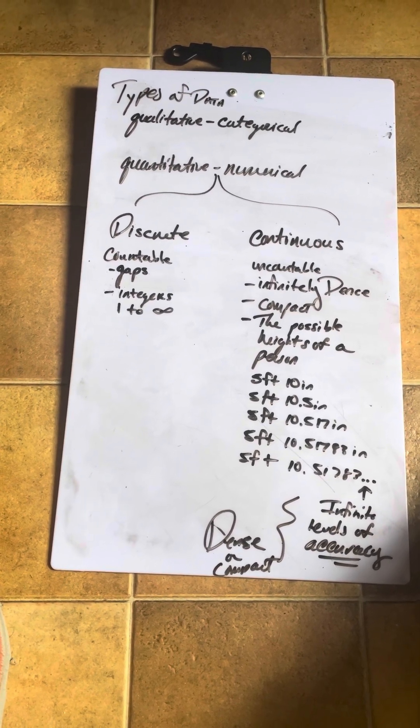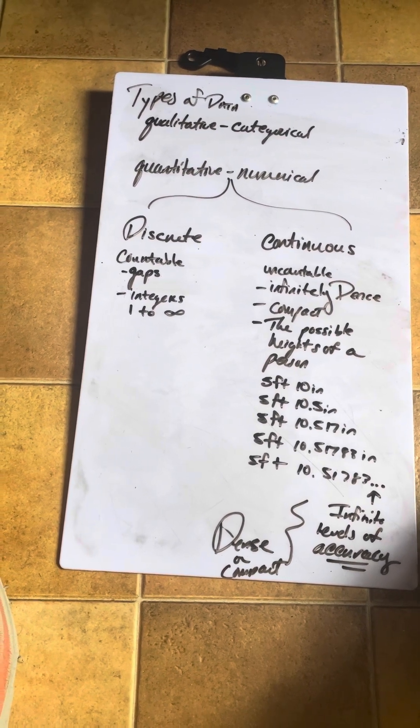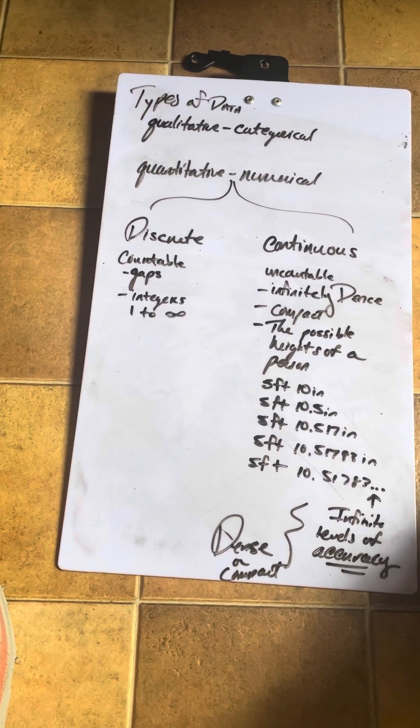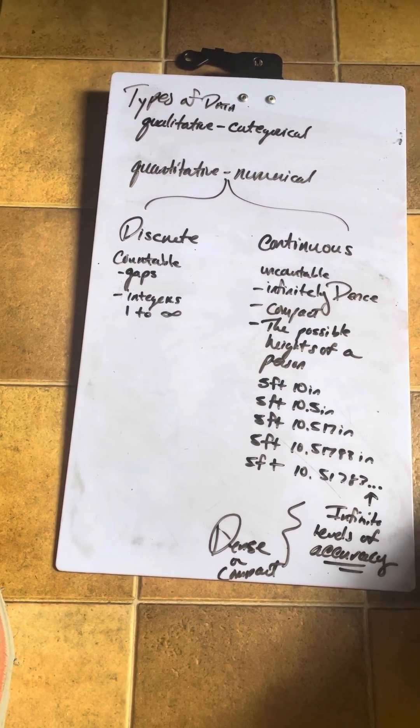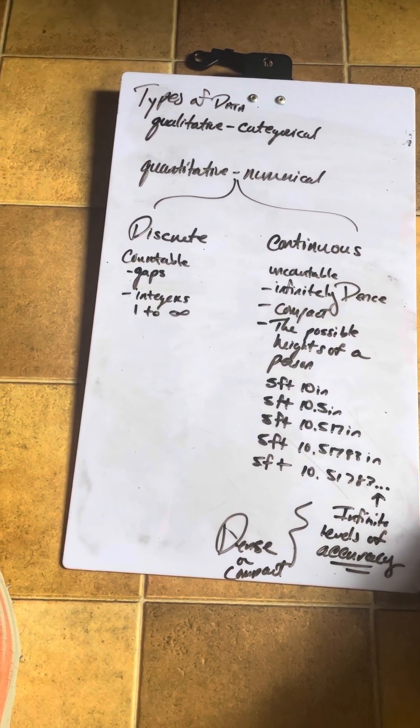So qualitative is about some type of quality. Color of eyes, color of hair, type of shoe, type of soccer ball, type of car, color of car. So it's some kind of thing you can categorize.